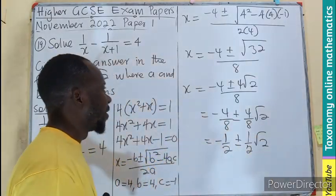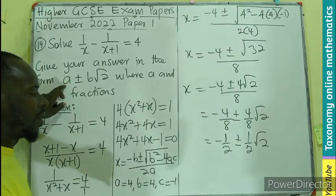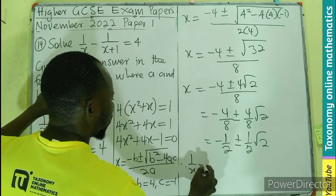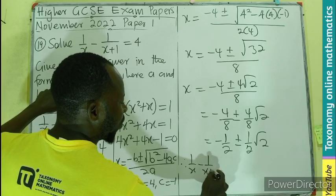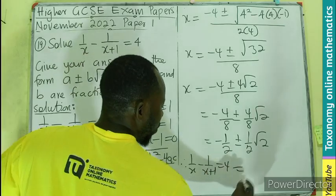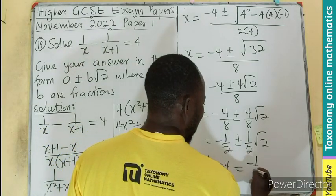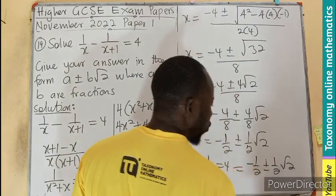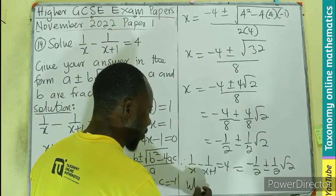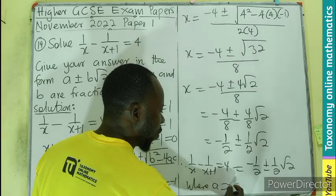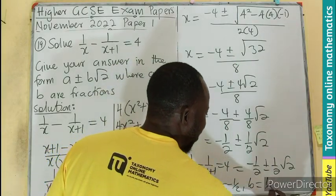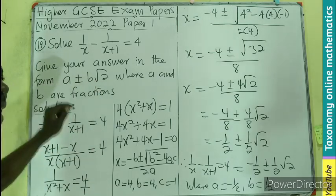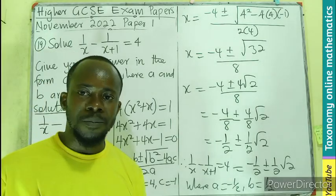So therefore, our 1 over x minus 1 over x plus 1 equals 4 will be equals to minus half plus or minus half the root of 2. Where your a will be minus half, your b will be half. The number in front of the root 2 is b.